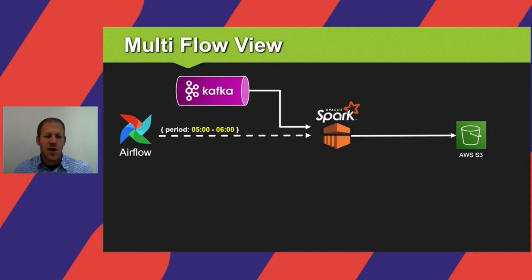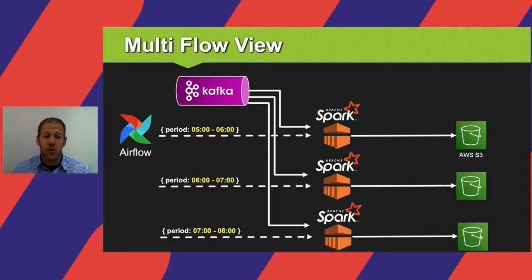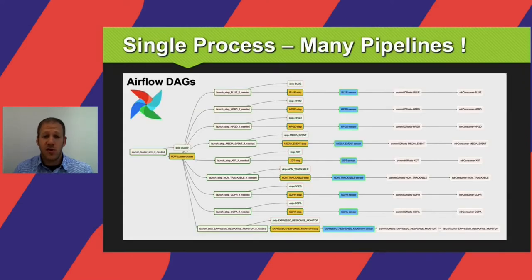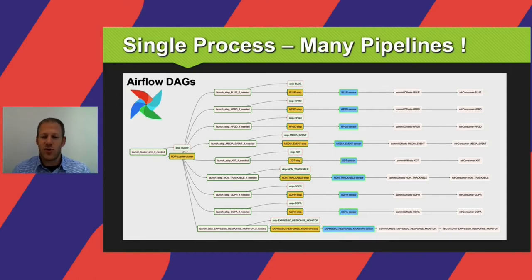When we need to run multiple tasks with multiple time periods, maybe together, we can just spin up more isolated pipelines and it just works. As a result, we now run multiple pipelines with multiple topics, multiple time periods, and it works like a charm. I'm going to pass it back to Ofer for the results.